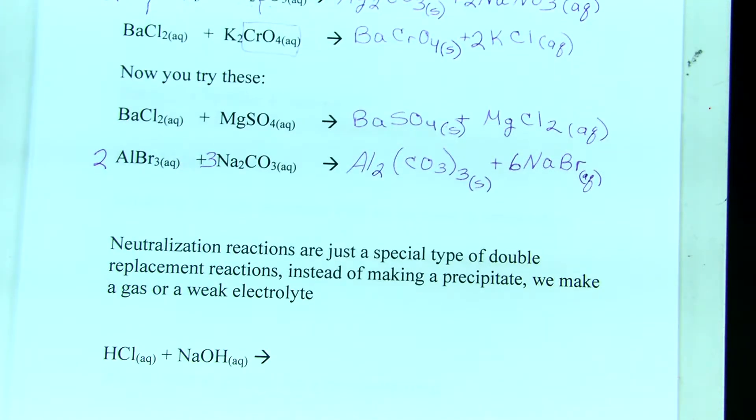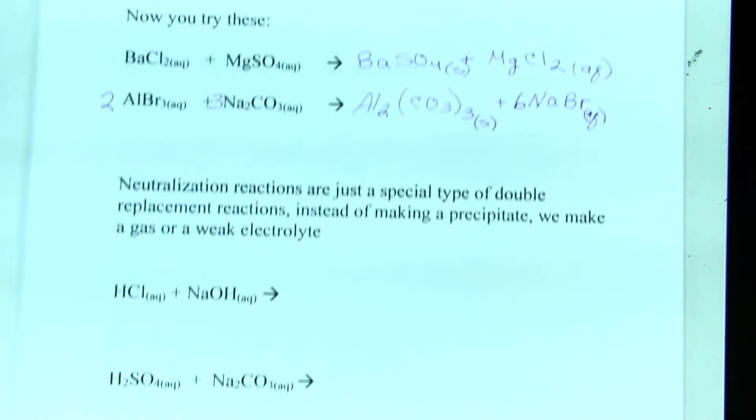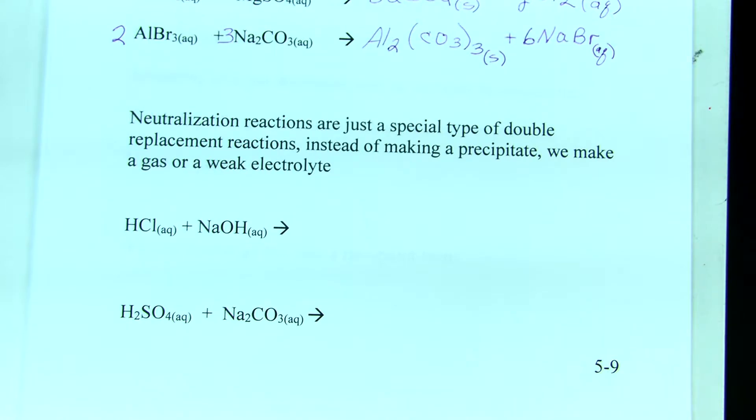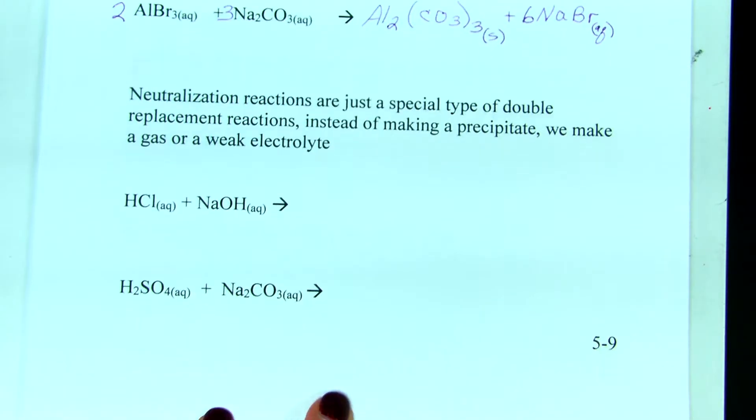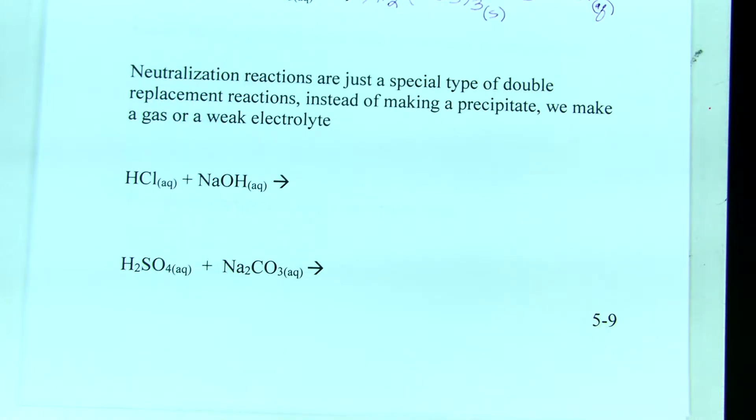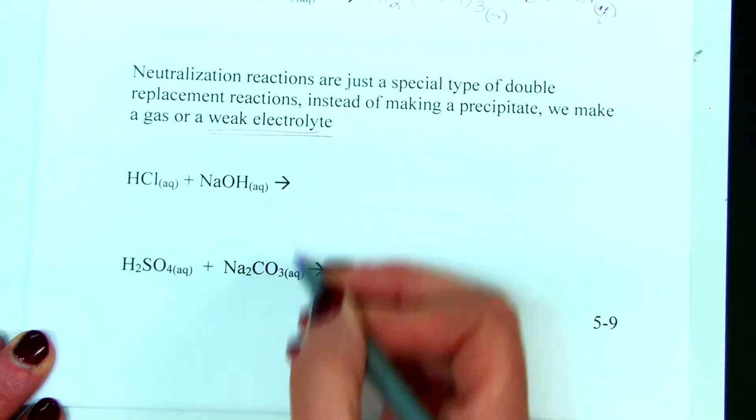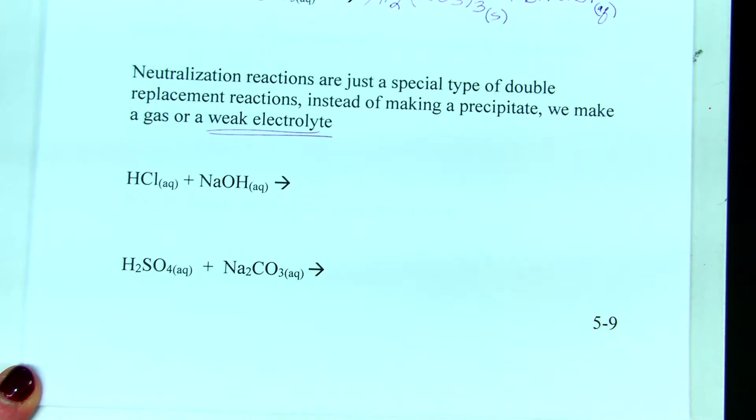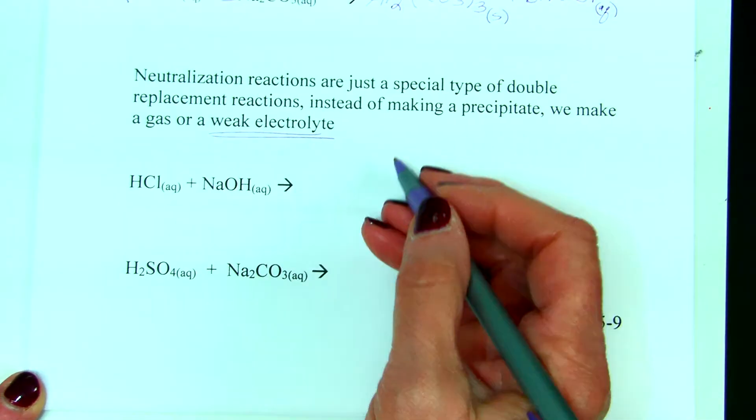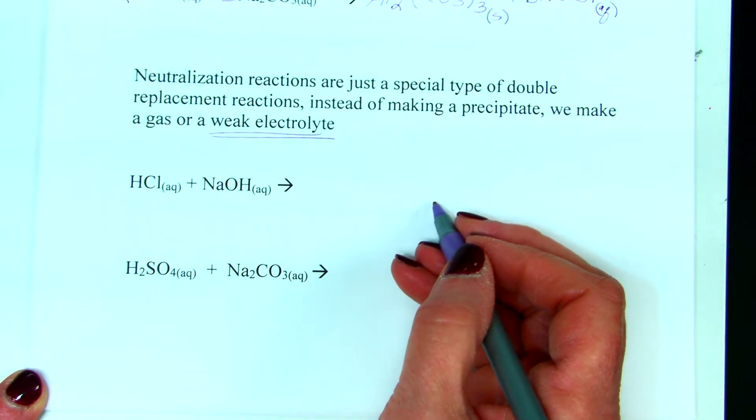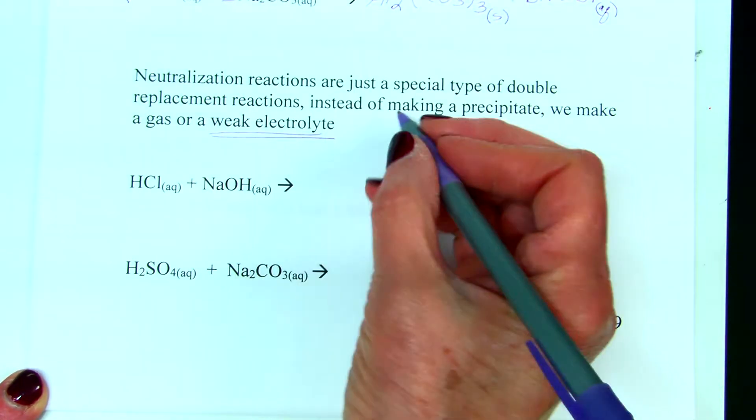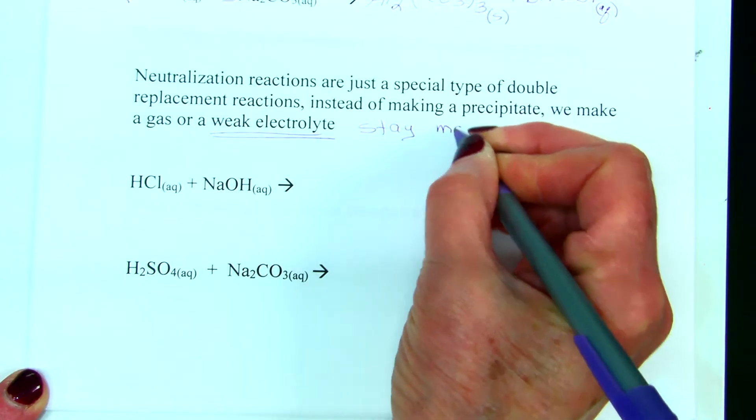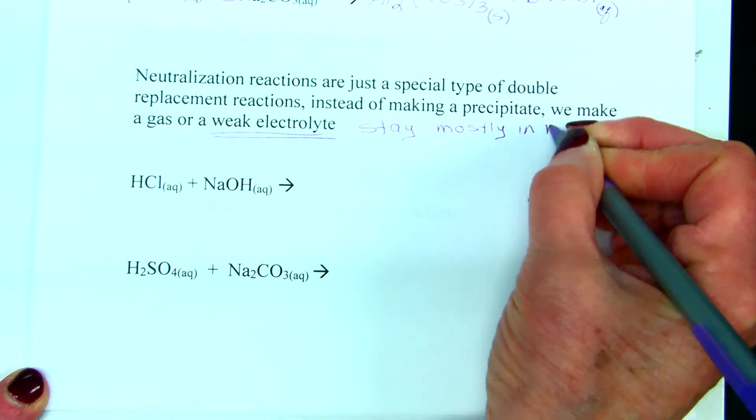So, we've talked about double replacement, and now we're going to look at those neutralization reactions. We identified them as something different because they are acid and base making a salt plus water, but the thing is they're still double replacement, so we follow the same rules. The difference is that often we make a weak electrolyte. We don't make a solid. We don't make a precipitate. We made a weak electrolyte.